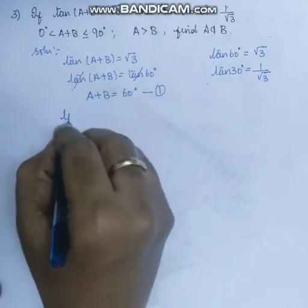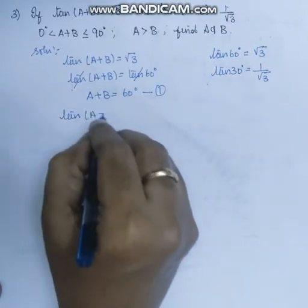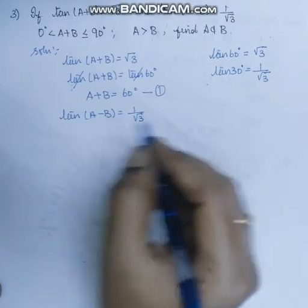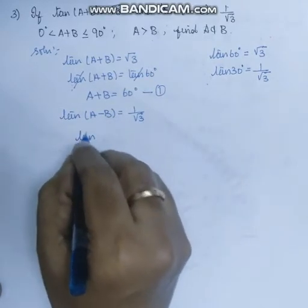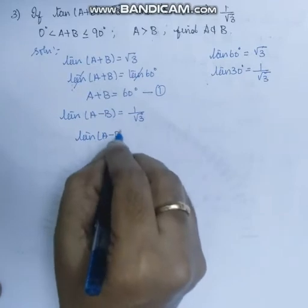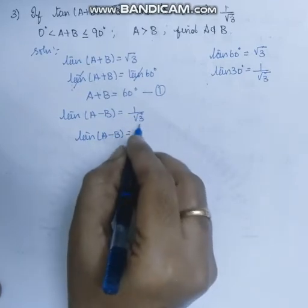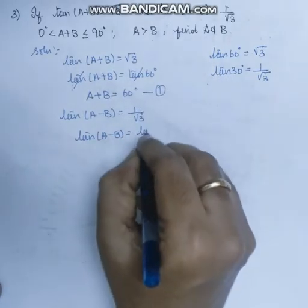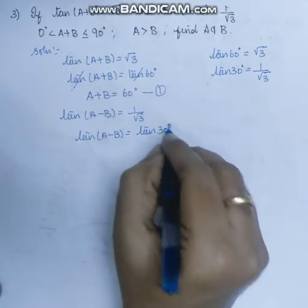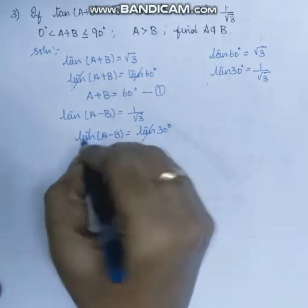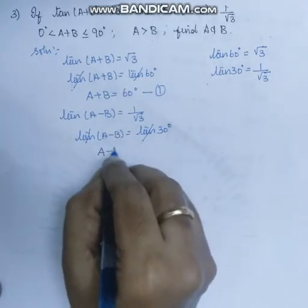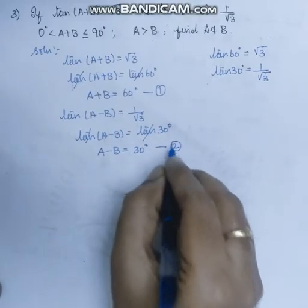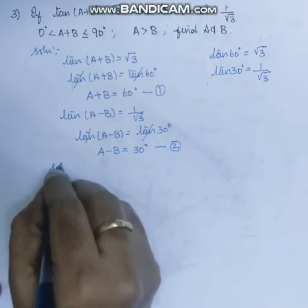Next, tan(a-b) is equal to 1 by root 3. The value of 1 by root 3 is tan 30 degree. So tan(a-b) equals tan 30 degree. Cancelling tan on both sides, a minus b is equal to 30 degree. This is the second equation.